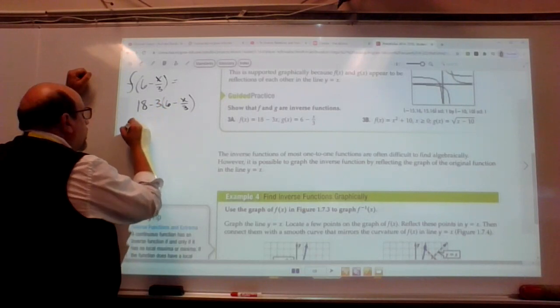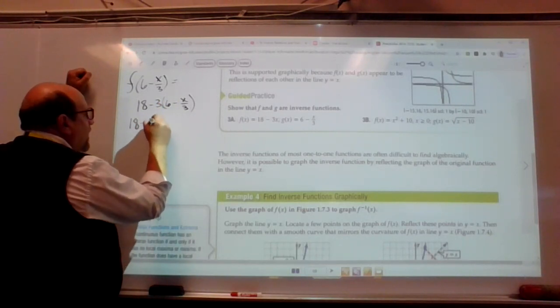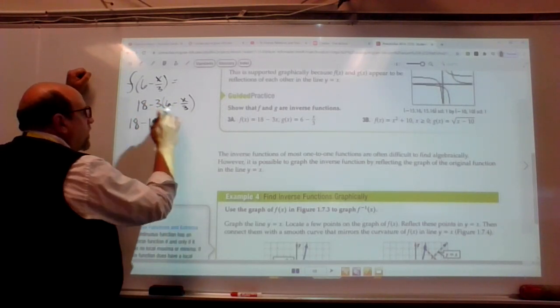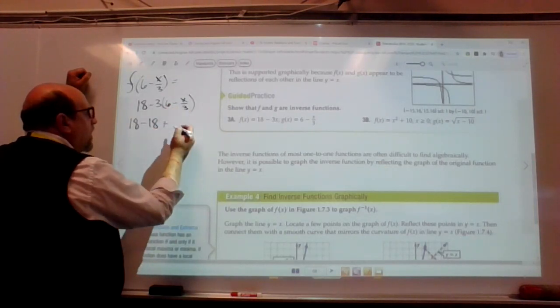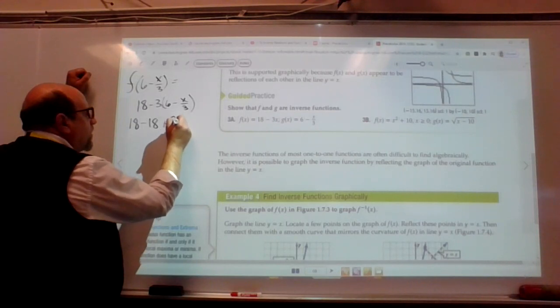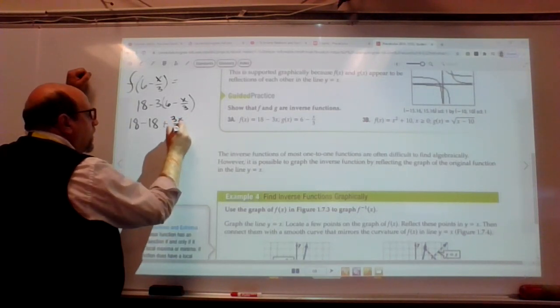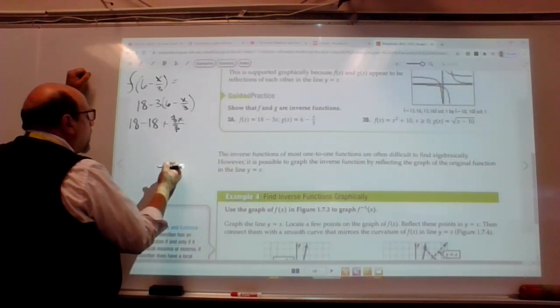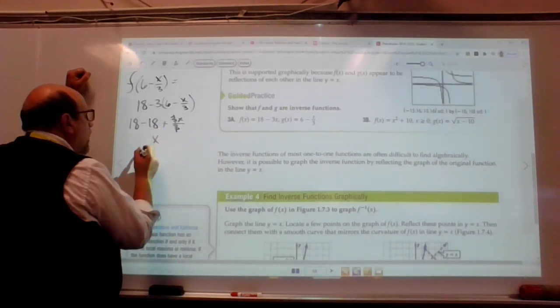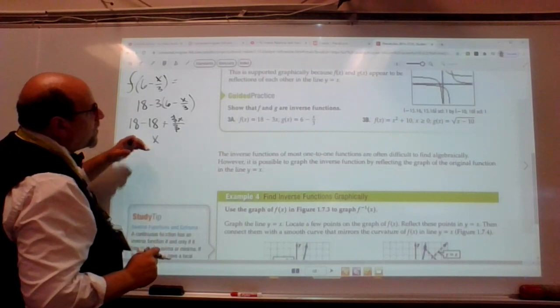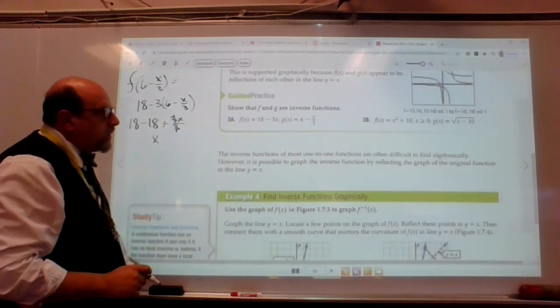We'll do our distribution. 18 minus 18, negative 3 times negative x over 3 is positive 3x over 3, which boils down to 1x. 18 minus 18 is 0. We end up with x. So this is indeed, algebraically, an inverse.